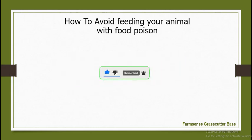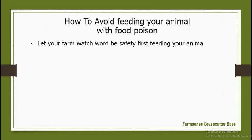How do you avoid feeding your animal food poison? Number one: let your watchword be 'safety first' when feeding your animals. Be detailed, sensitive, and conscious — check thoroughly the grasses or food you are giving them. You are conscious of the safety of the animal. They can't defend or protect themselves, so you must take responsibility to ensure what you give them is safe.